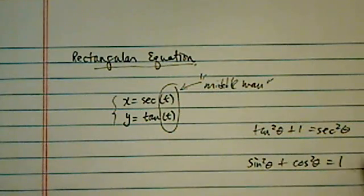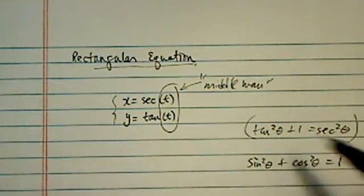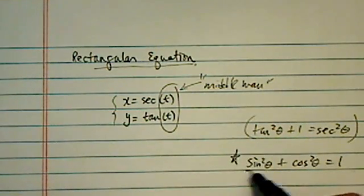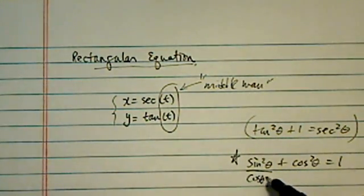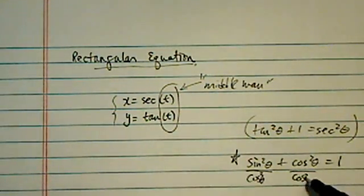So, on a test or whenever I need to recreate this one, I always start from here and divide the whole equation by cosine theta squared.